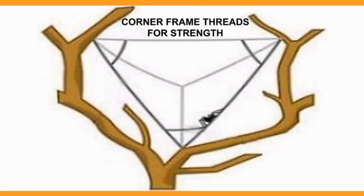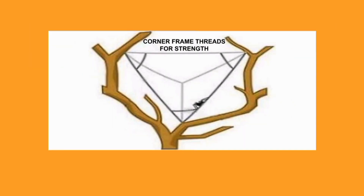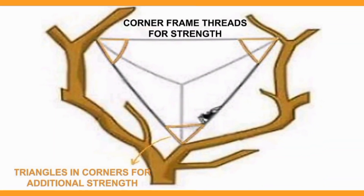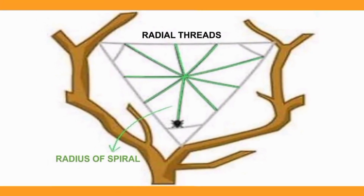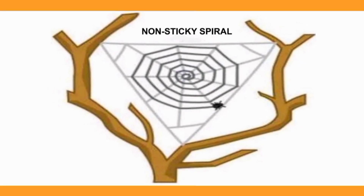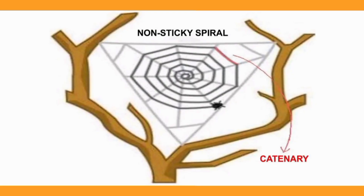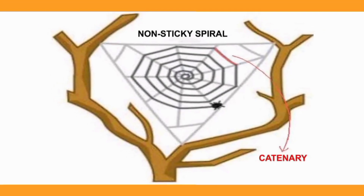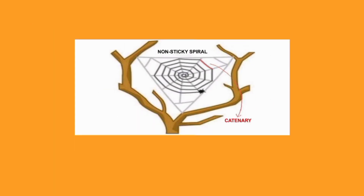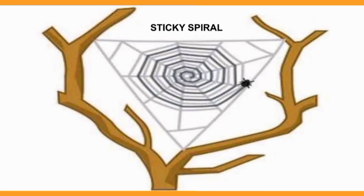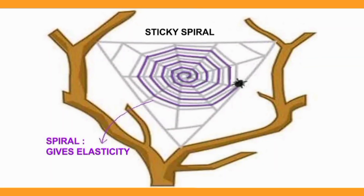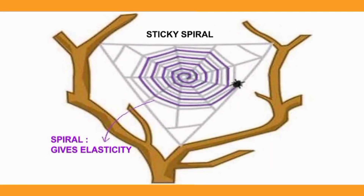Then it makes three corner frame threads to keep the triangle in place. Thus, three more triangles are formed. Then it lays out the radii of its spiral. It spins a non-sticky spiral to strengthen the framework. The spiral is not perfectly circular. Between the radial threads, it forms a curve called catenary. Finally, it spins a sticky spiral to catch its prey. The spiral shape adds to the elasticity of the web.